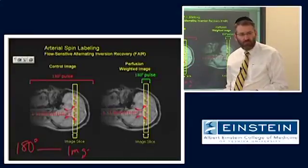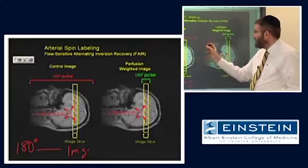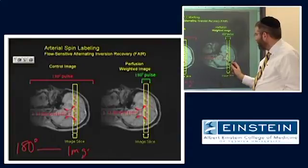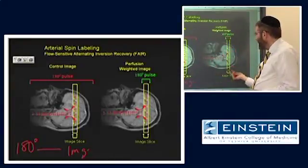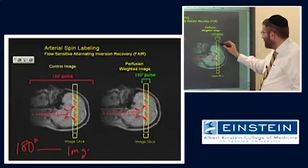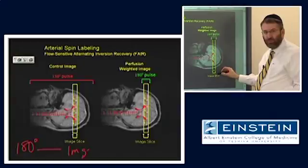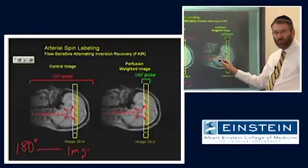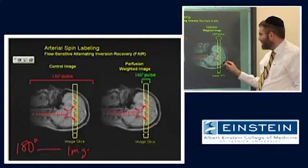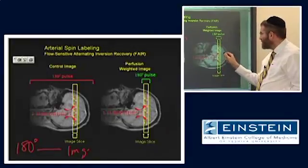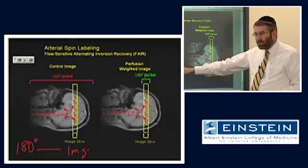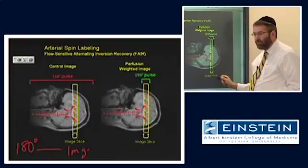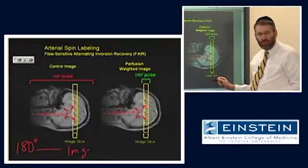Both the spins that flowed into the image and the stationary spins all look the same. And this is our control image. On the other hand, if we do this one more time, but apply that 180 degree RF pulse only to the slice of interest, then all of a sudden the spins in the slice are inverted. And during this period of time, some of them are replaced by uninverted spins from outside the slice. So at the time that we image, we have our stationary spins which are inverted, just like they were in the control case, but the flowing spins that have entered are not inverted. With me? Okay.